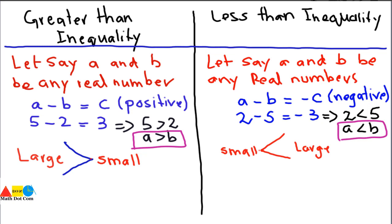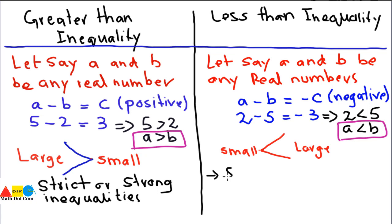Both 'greater than' and 'less than' inequalities are also called strict or strong inequalities. They are called strict inequalities because there is no equality sign in them — when we know that 5 is greater than 2, or the value of a and b, we are certain about the relationship. Inequalities with only greater than or less than signs are called strict or strong inequalities.